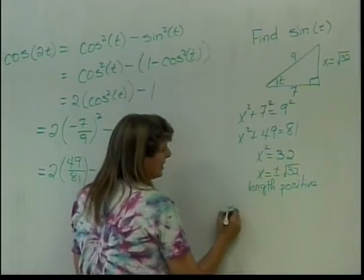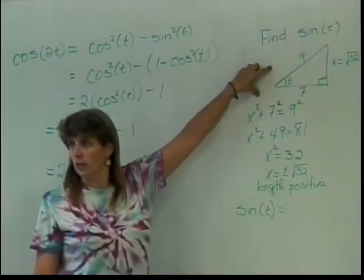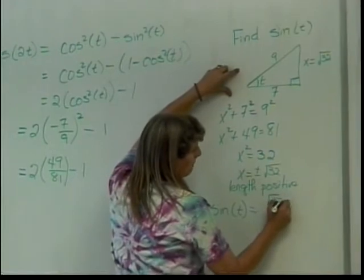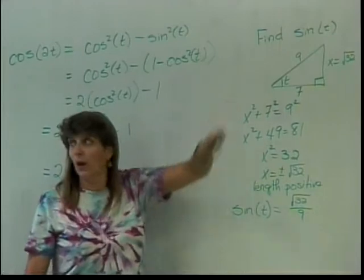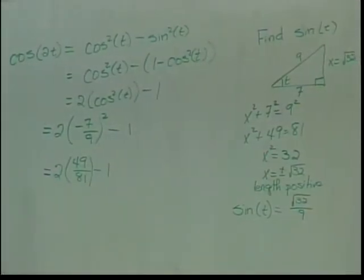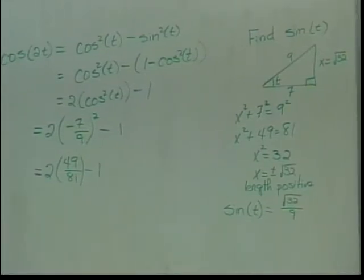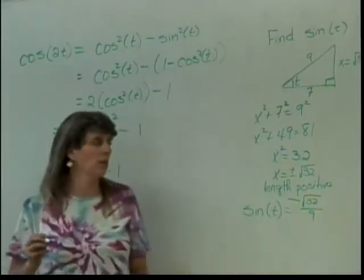But what is the sine of t? Based on the triangle, the sine of t is square root of 32 over 9. However, I can't do anything just based on the triangle — I have to figure out which quadrant t is in. T is in the third quadrant, since it goes from pi to 3 pi over 2. Sine in the third quadrant is negative, so my sine of t is going to be negative.